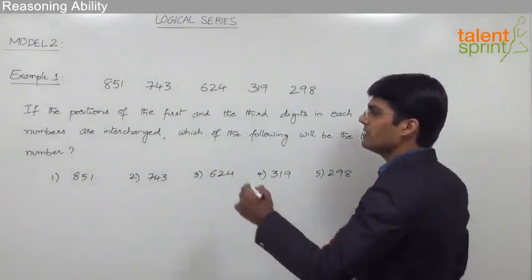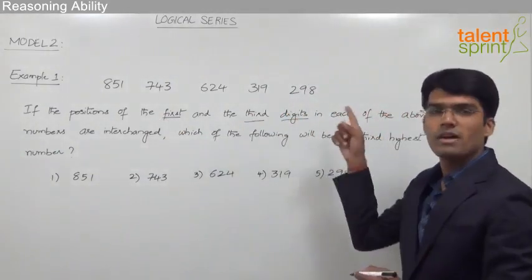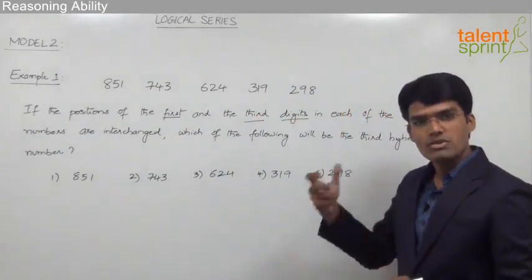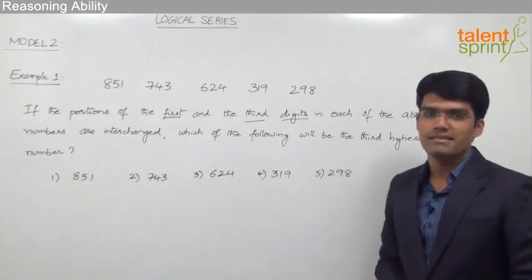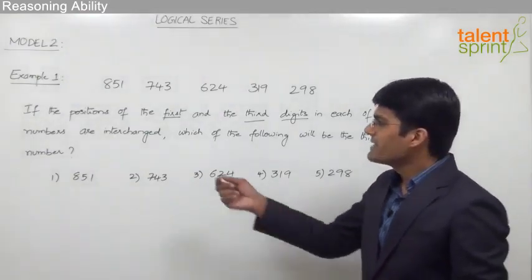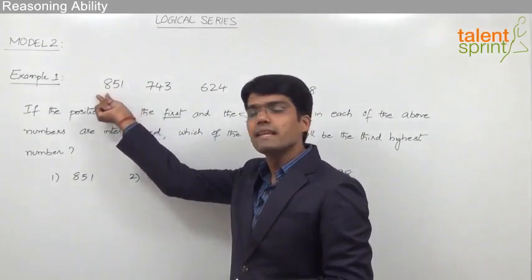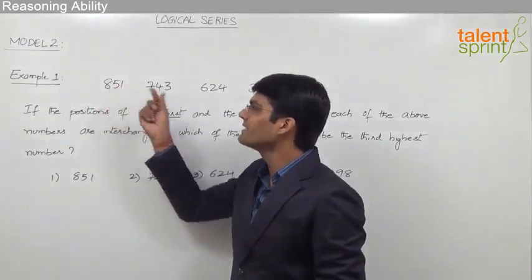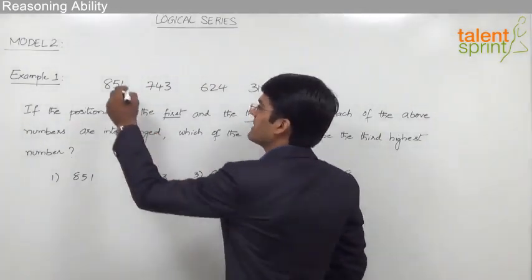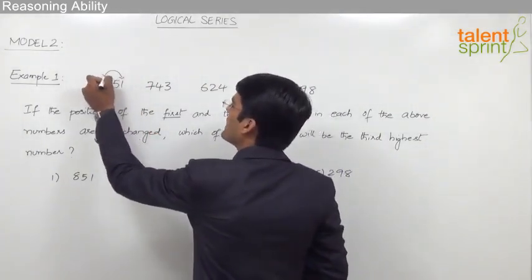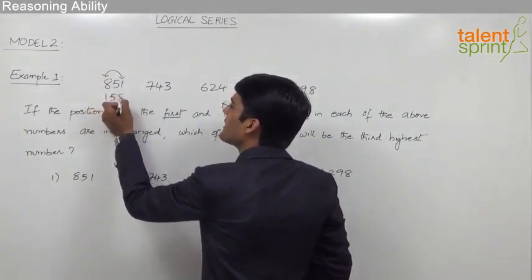As given in the question, we need to interchange the first and the third digits in each of the above numbers, and from those new numbers find out which is going to be the third highest number. In the number 851, the first digit is 8, the second digit is 5, and the third digit is 1. By interchanging the first and the third digit — that is, interchanging 1 and 8 — the new number we obtain is 158.